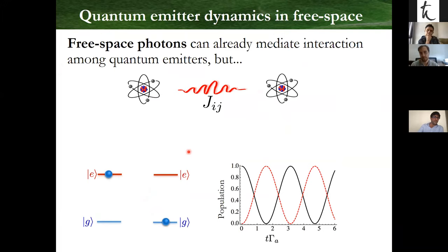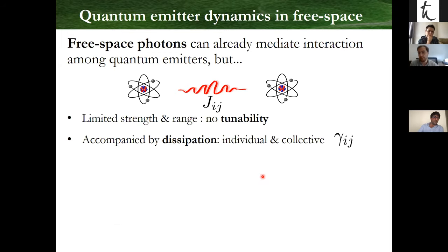The problem is that these interactions are very interesting — in principle you can do entangling gates with them, use them for quantum simulation and so on — but in free space, by default, these interactions are also accompanied by other terms, in particular dissipative terms. The photon can eventually not arrive at the other atom but fly away, giving rise to non-unitary dynamics and collective dissipative terms, which could be interesting as they give rise to superradiance.